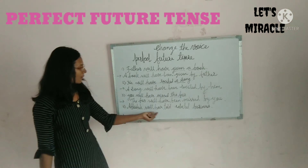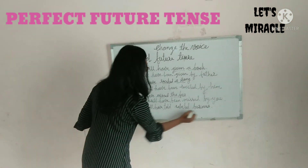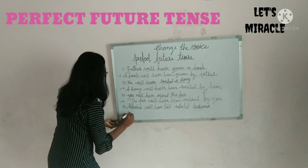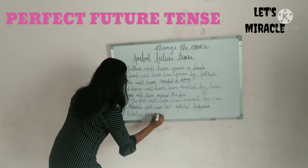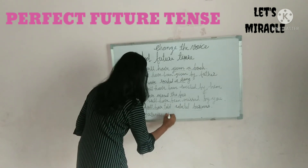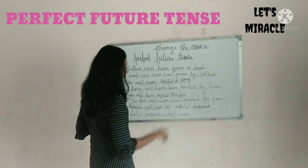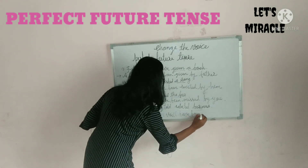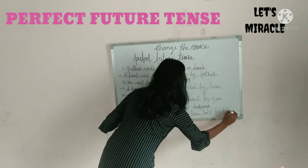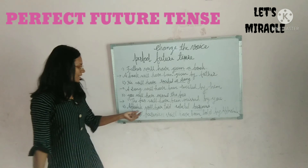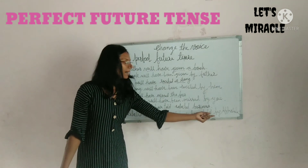Abhishek will have told related business. It will become: related business will have been told by Abhishek. So Abhishek will have told related business becomes related business will have been told by Abhishek.